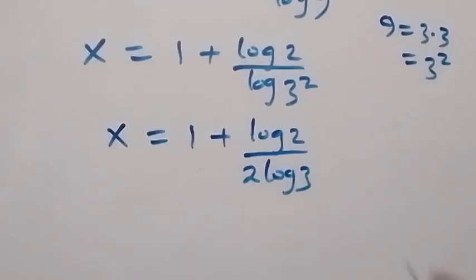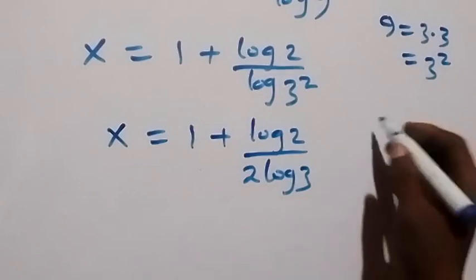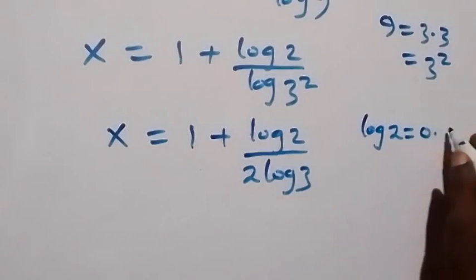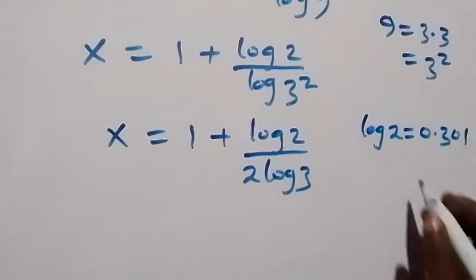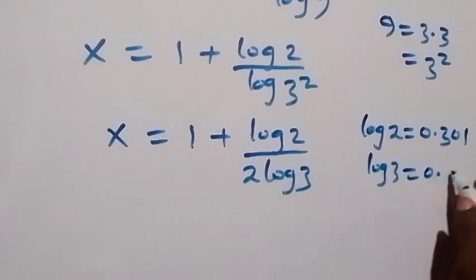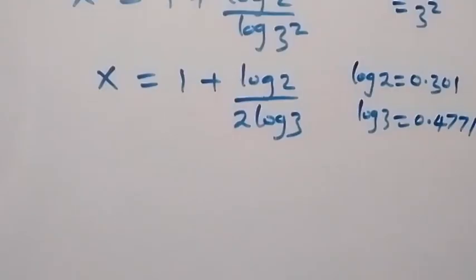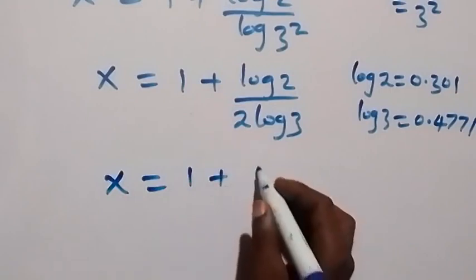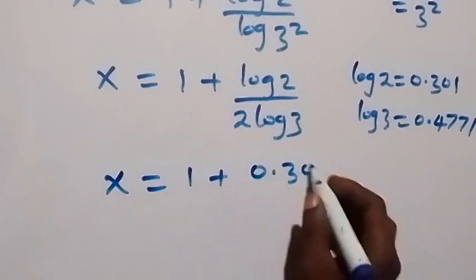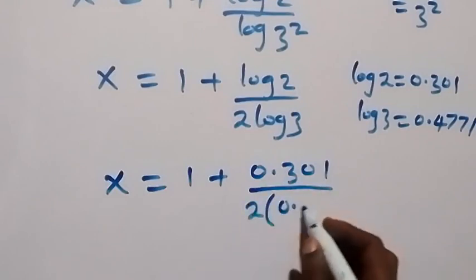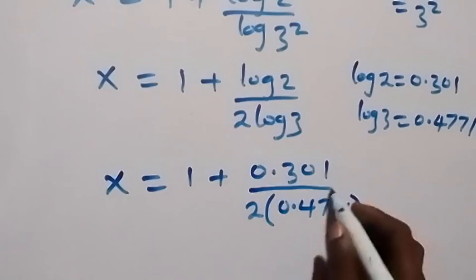Using the approximate values of log 2 and log 3, we have log 2 equals 0.301 and log 3 equals 0.4771. When we use this here, we have x equals 1 plus 0.301 over 2 times 0.4771.